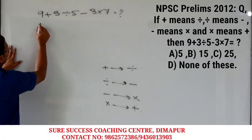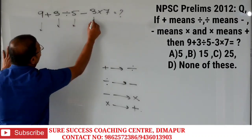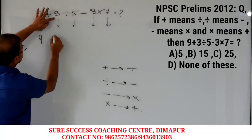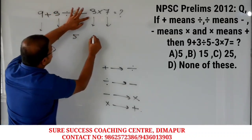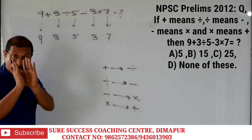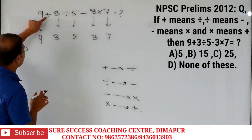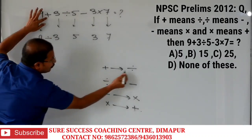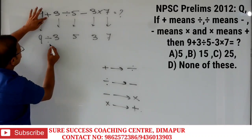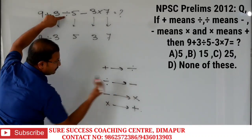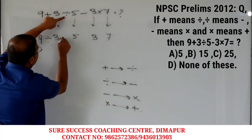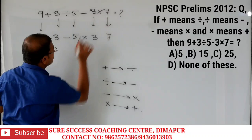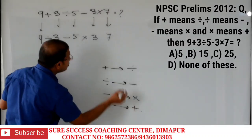What you will do: first write all the numbers only — that means 9, 3, 5, 3, 7. After that, in place of plus, we will write division. After that, in place of division, we write subtraction minus. Then minus becomes multiplication — into. After that, multiplication becomes plus.